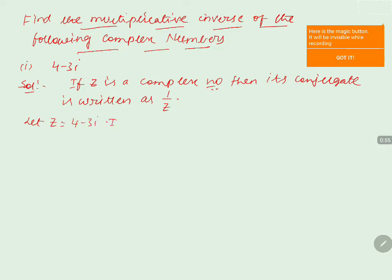Then its multiplicative inverse is 1 by z equals 1 by 4 minus 3i. So 1 by z equals 1 by 4 minus 3i.